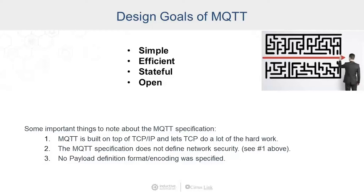Number two, it had to be efficient. Again, with 300 baud of bandwidth, the more stations you could get on a single VSAT space segment, the more effectively you could use your VSAT infrastructure.